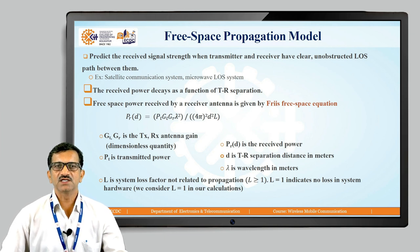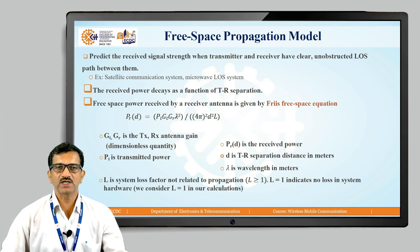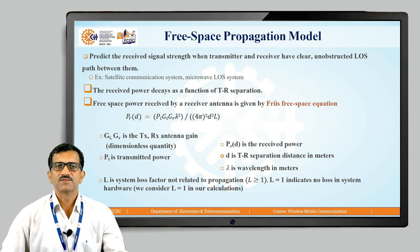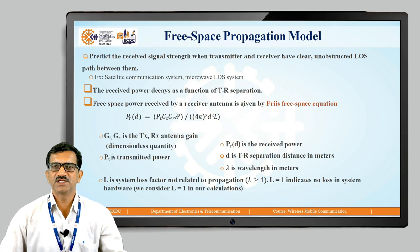The goal is to predict the receiver signal strength when the transmitter and receiver have a clear, unobstructed line-of-sight path between them. In the case of satellite communication and microwave line-of-sight systems, this applies. We are going to calculate the power received at the receiver only. Received power decays as a function of transmitter and receiver separation. Free-space power received by the receiver antenna is given by the free space equation.